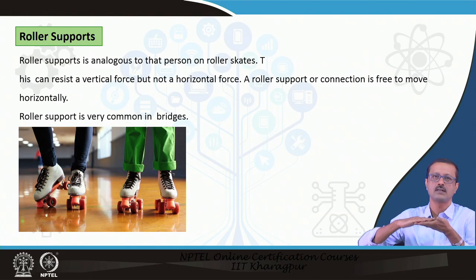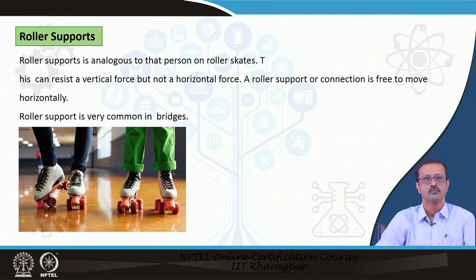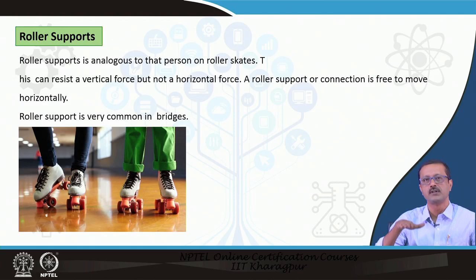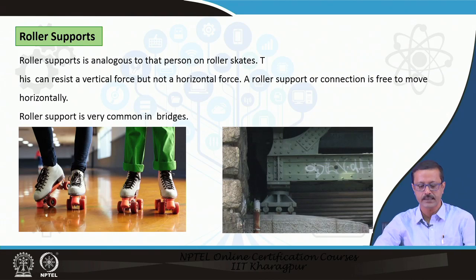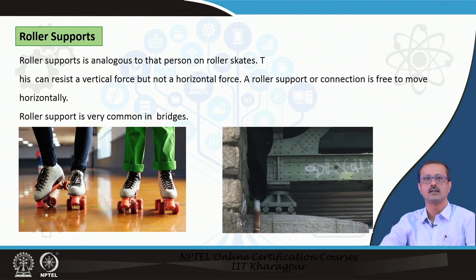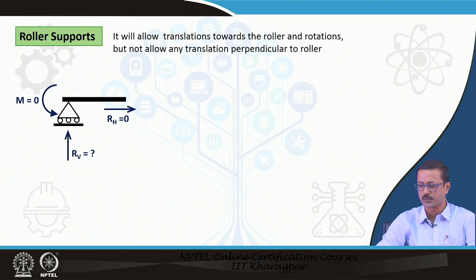Roller supports are like a member resting on a roller or a wheel — analogous to someone in a roller skating ring. The support allows the member to move in particular directions. In a bridge, a roller support allows some thermal expansion or accommodates dynamic loading, permitting some movement.